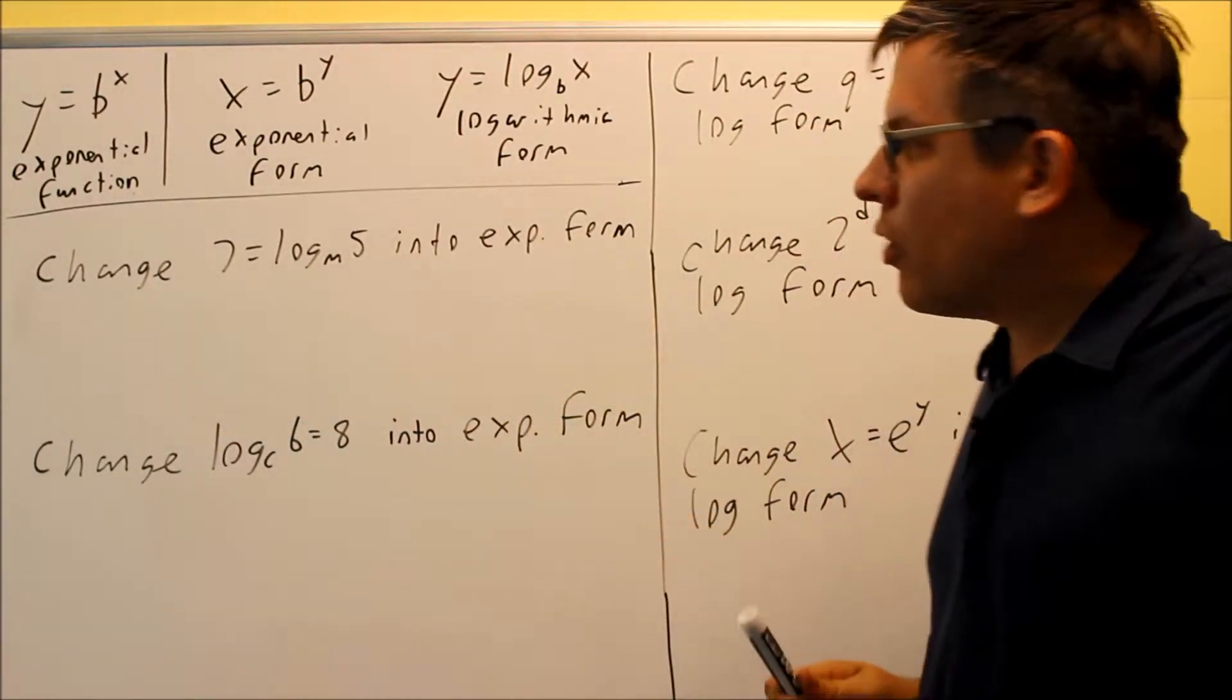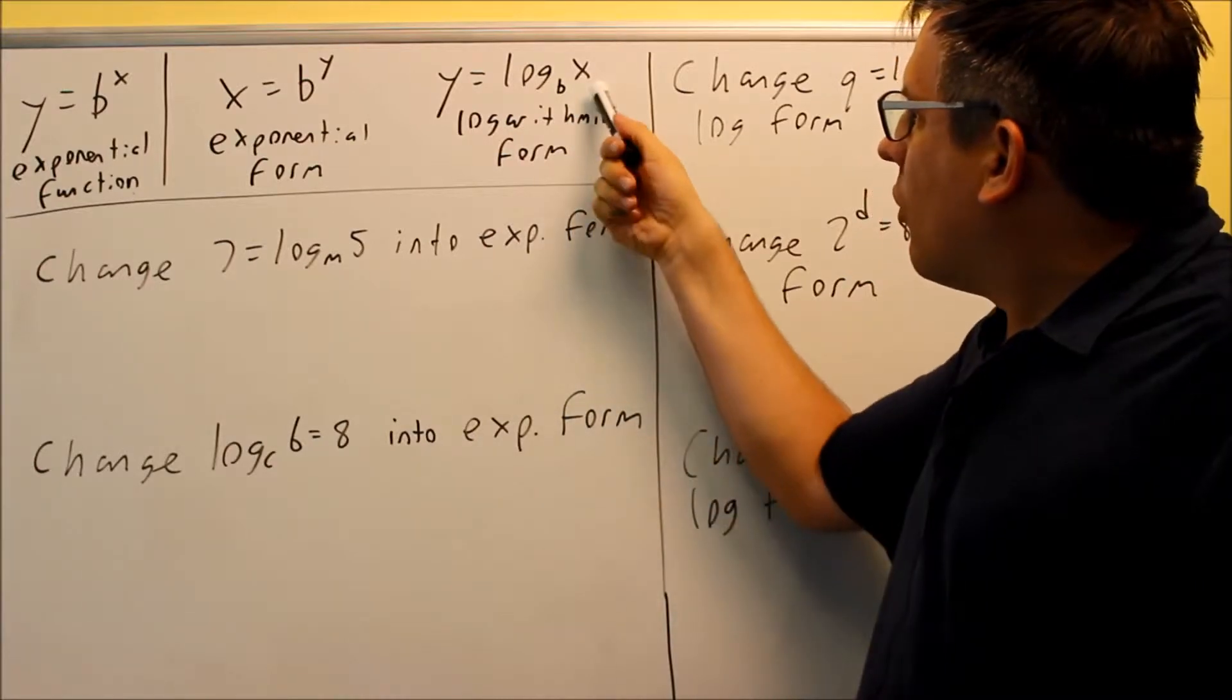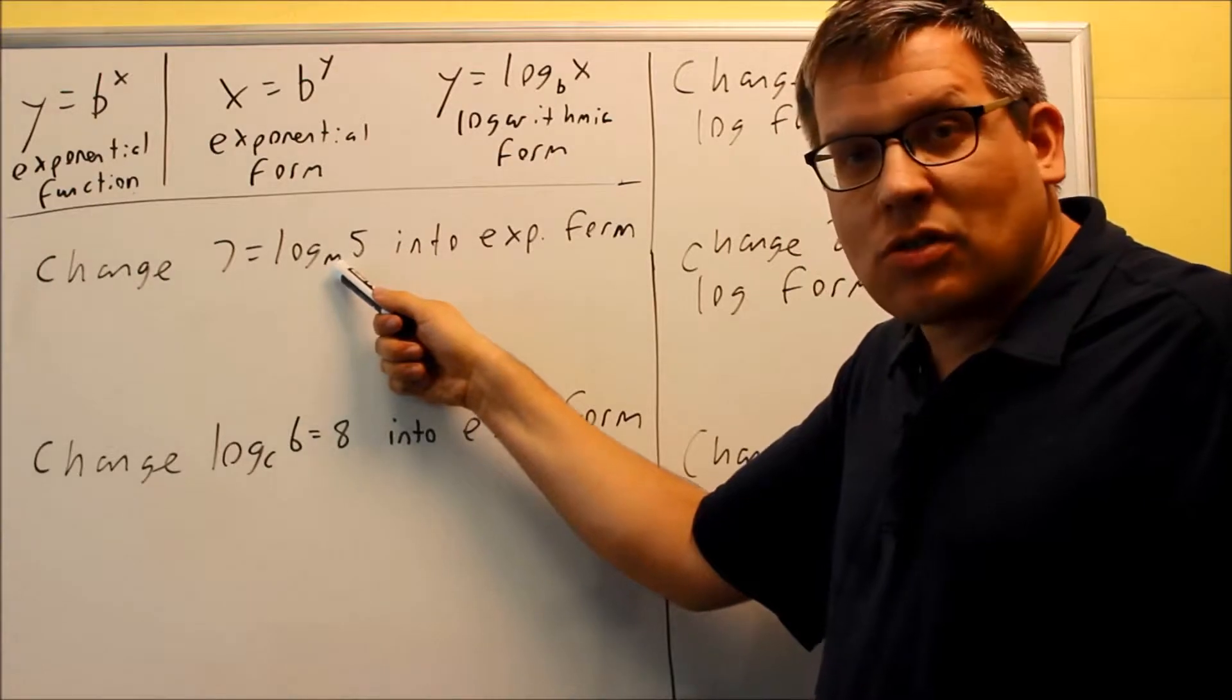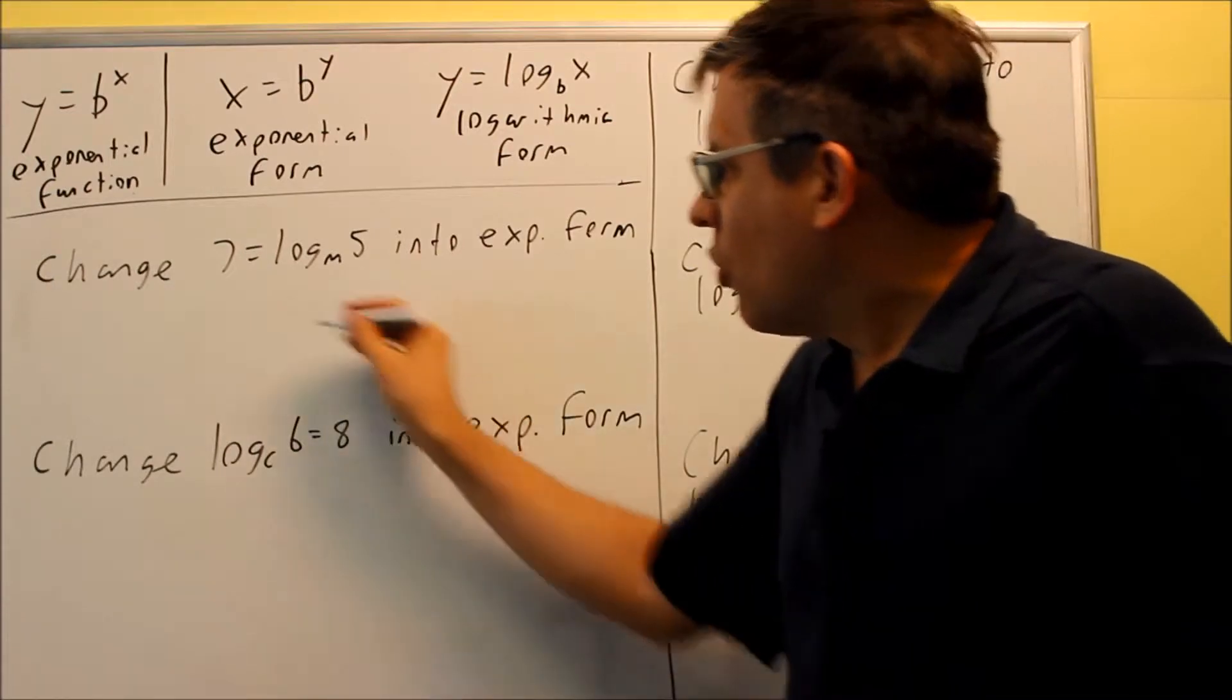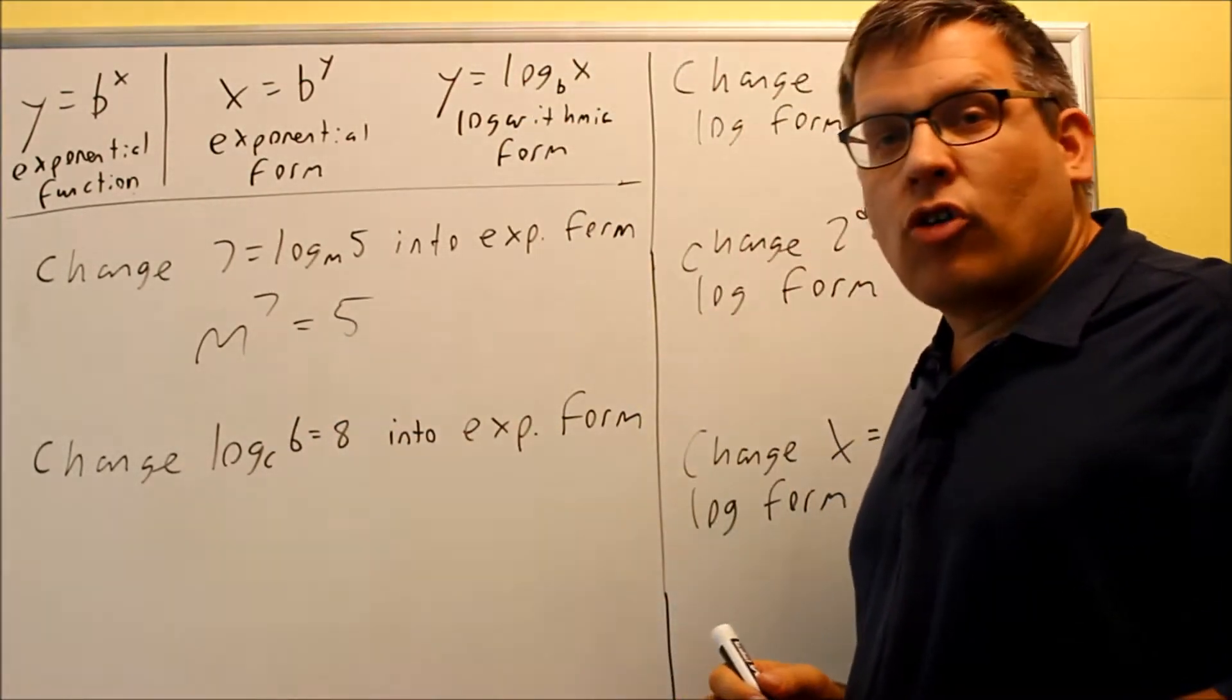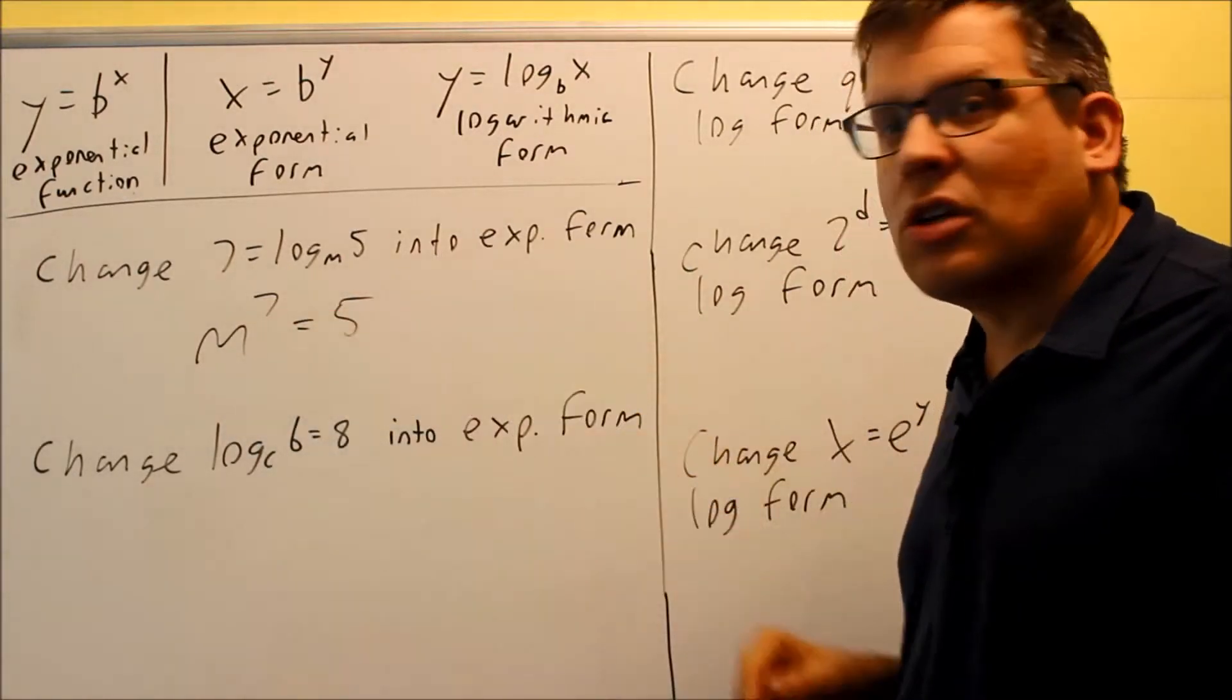So the first example says we want to change 7 equals log m 5 into exponential form. The way you do this is if you look at the original one, we have a b. It's raised to the y, which is after the equal sign, is equal to x. So when you're changing from one form into the other, you're going to take the base, you'll raise it to the number after the equal sign, and that's going to equal whatever number is left. So to do this one, we're going to start with the base. The base is m. We're going to raise it to the number after the equal sign, m to the 7, and that's going to equal 5. And that would be it. We don't have to solve that equation. It's not asking for us to solve it. They only want us to take it back into exponential form, so it's solved. m to the 7th is going to equal 5.